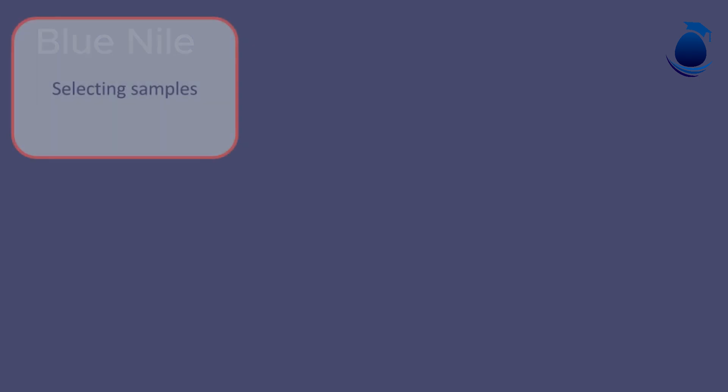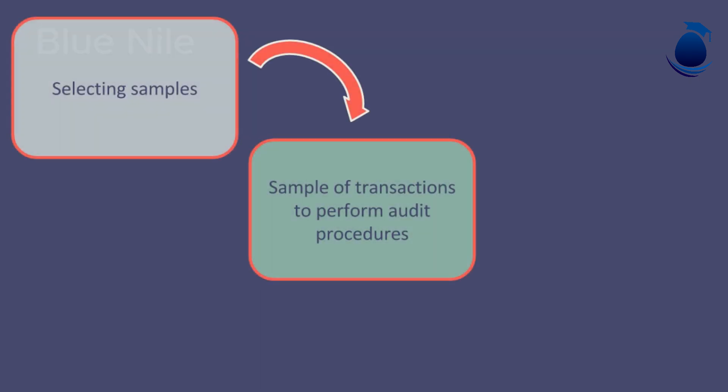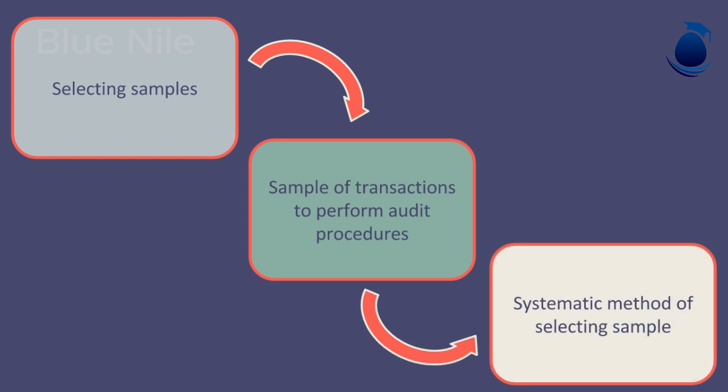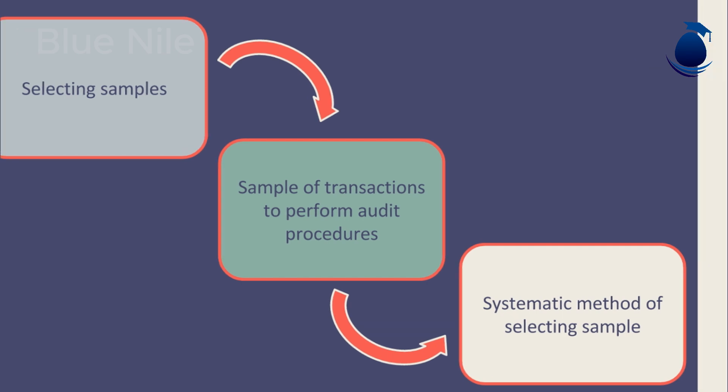The audit software can select samples of transactions to perform audit procedures. This is a systematic method of selecting the sample, as it requires no influence from the auditor in choosing the sample to test.